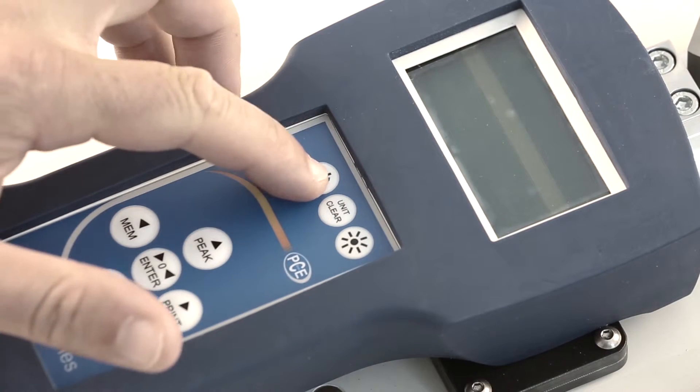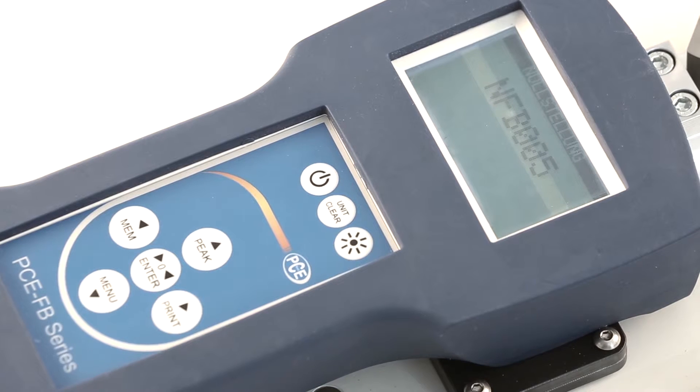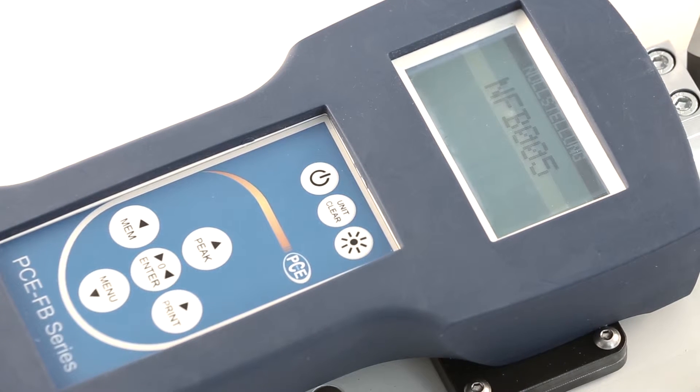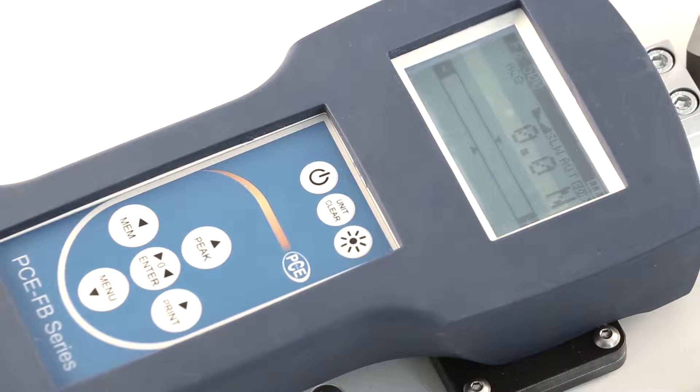Switch the measuring equipment on. The equipment calibrates itself to the zero point and returns to the initial state.